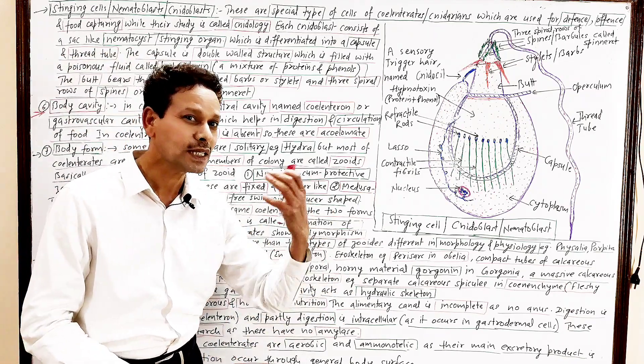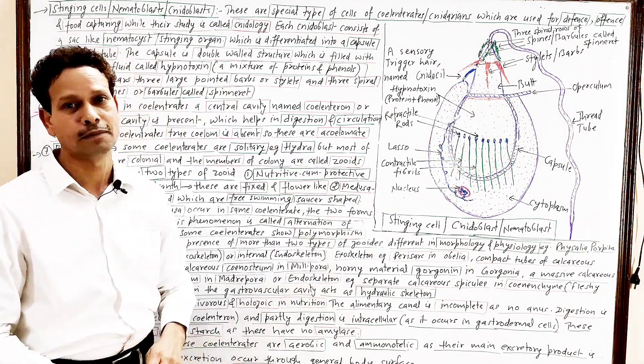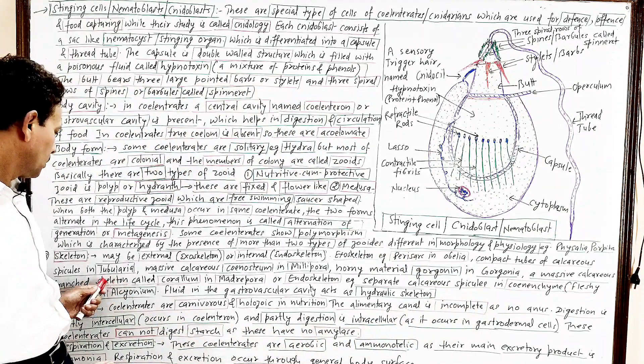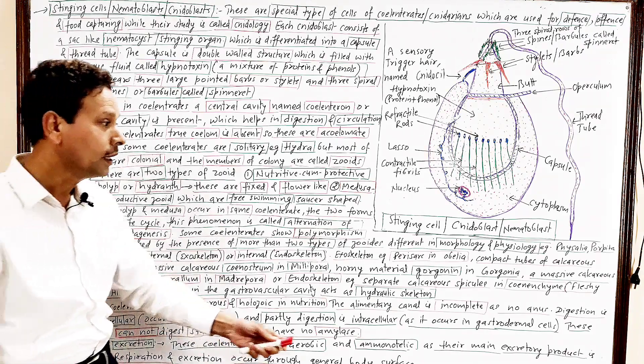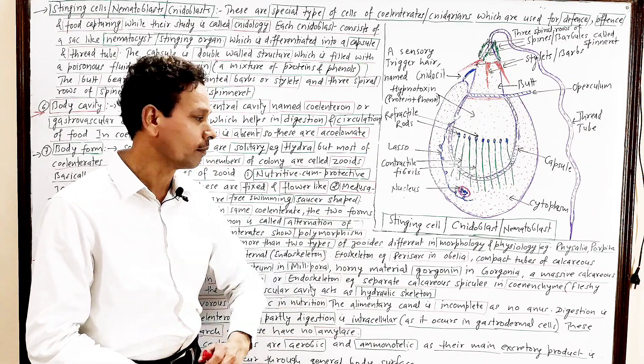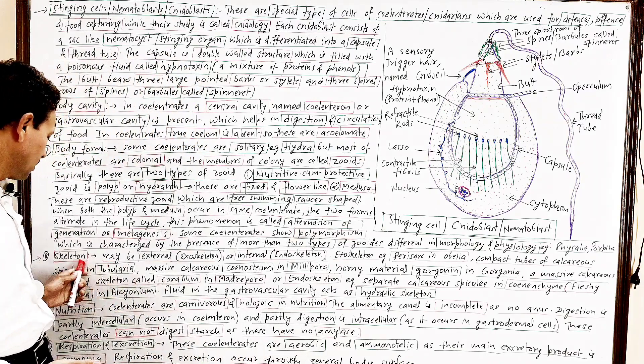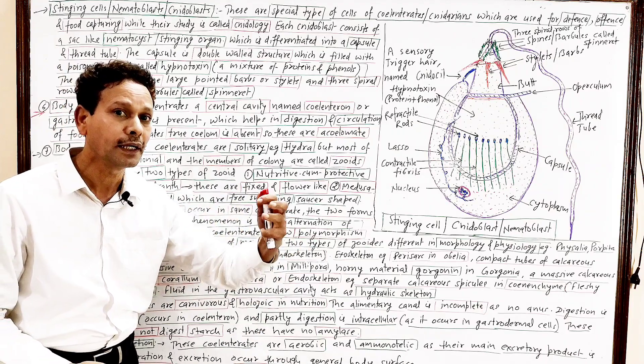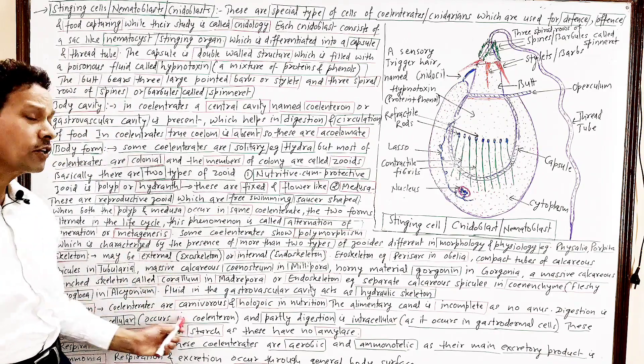And that endoskeleton develops in the form of spicules. As in case of Alcyonium. In case of Alcyonium, in that mesenchyme, which is fleshy mesenchyme, named coenenchyme. And it is endoskeleton, it is found in the forms of separate spicules, which are calcareous spicules.